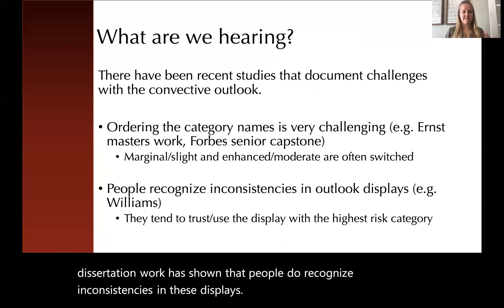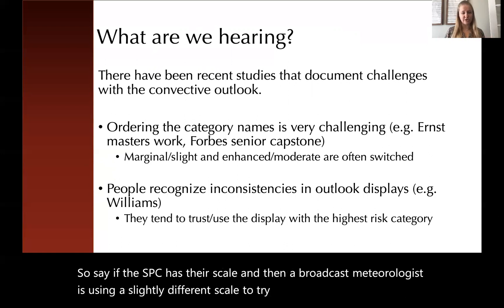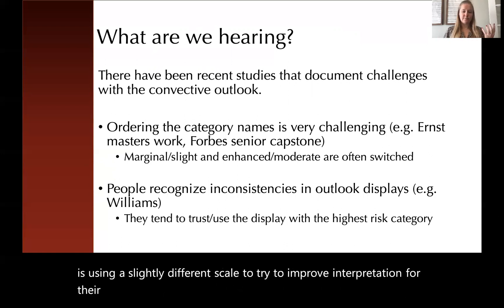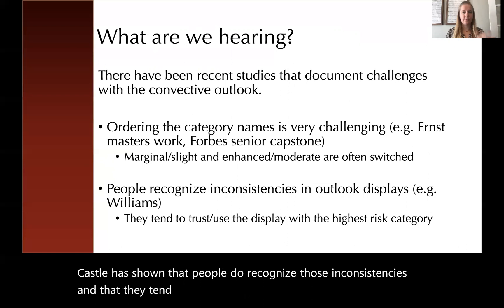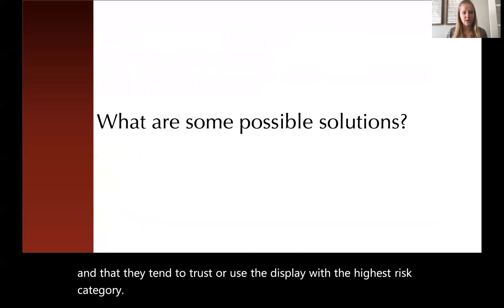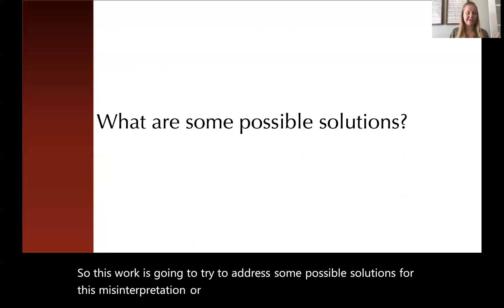If the SPC has their scale and then a broadcast meteorologist is using a slightly different scale to try to improve interpretation for their audience, Castle has shown that people do recognize those inconsistencies and that they tend to trust or use the display with the highest risk category. This work is going to try to address some possible solutions for this misinterpretation or misordering, particularly of the categorical scale.